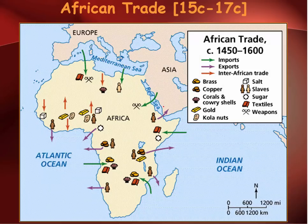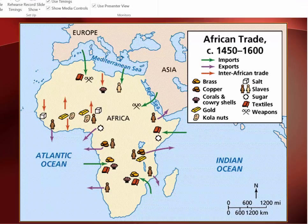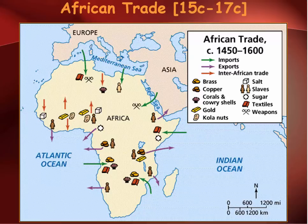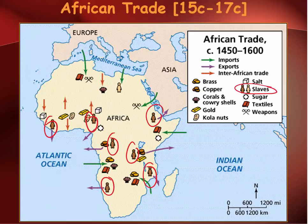We start to see European port towns grow up, not just those of the Portuguese, and also the growth of an Afro-European culture. These European port towns were more what we call Afro-European. In St. Louis, which is in Senegal, you have a very strong European-African culture that began to develop. Looking at this map of African trade between the 15th and 17th century, we see that there are things besides slaves being traded — brass, copper, ivory, and all these other goods — but slaves are shown all over the map.